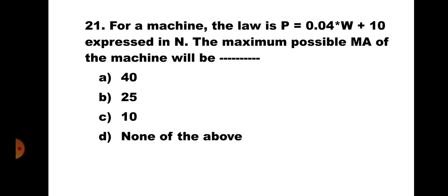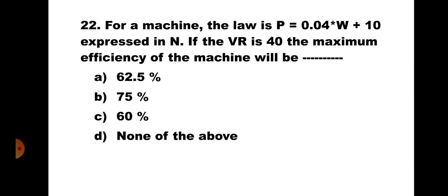Question number 21: For a machine, the law is P = 0.04W + 10 expressed in Newton. The maximum possible AMA of the machine will be: A) 40, B) 25, C) 10, D) none of the above. We know that maximum possible AMA is 1 upon small m, where small m is the coefficient of W in the law of machine, which is 0.04. So maximum possible AMA = 1/0.04 = 25. The correct answer is B) 25.